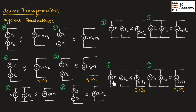If two current sources are connected in parallel and in opposite directions, if I1 is greater than I2, we replace them with a single current source equal to I1 minus I2, and the direction of the current source will be the same as I1. If I2 is greater than I1, we replace them with a single current source equal to I2 minus I1, and the direction of the current source will be the same as I2.